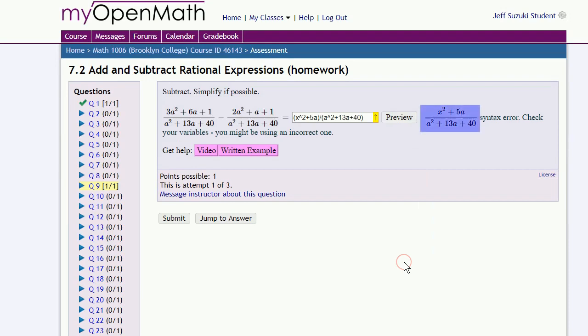And again, we see what we've entered in, and it objects to this. It doesn't like it. And again, MyOpenMath will generally try to identify what the problem is. And here, it doesn't like our variables, because the problem's in A, but we entered in this X. So let's go back and fix that.